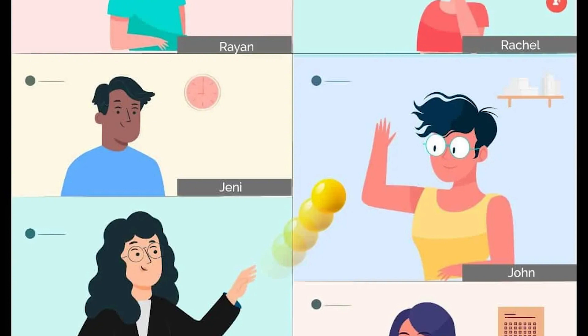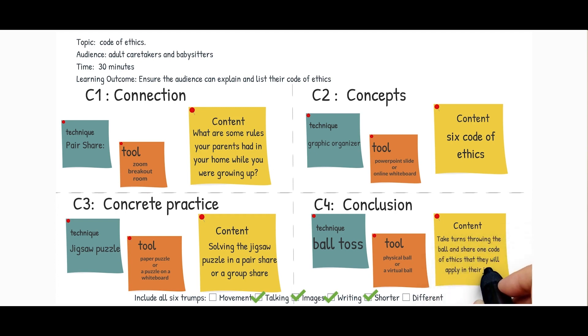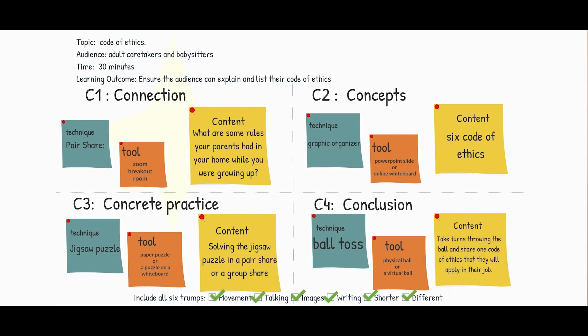Number four: conclusions. This is the reflection stage where learners review what they learned and plan how they will use it. Encourage them to share their takeaways and next steps. It helps learners internalize their learning and sets them up for success in applying it. For my training, I will use a technique called ball toss — the tool being either a physical ball or a virtual ball on Zoom — and the content is for learners to take turns throwing the ball; each person who catches it shares one code of ethics that will apply to them in their job.